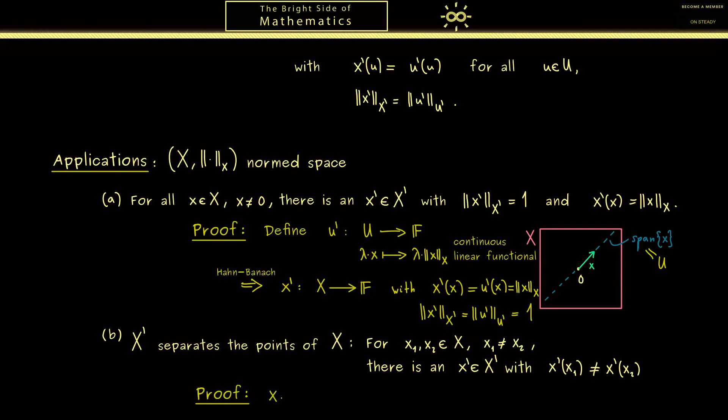This works by defining x as the difference x₂ - x₁. Because now we can use (a) and know that there exists an x' with the property that x'(x) is exactly the norm of x. And the norm of x is not 0 because x is not a zero vector.